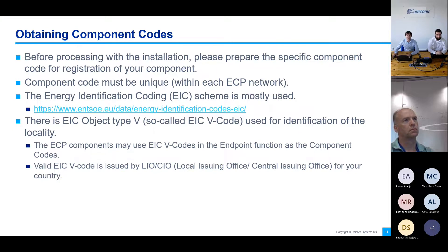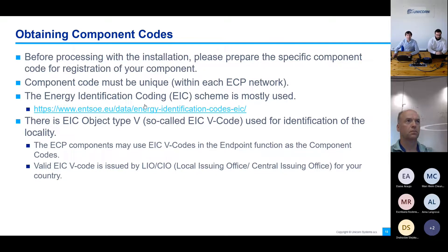Before starting with the installation, you also need to obtain component codes for your ECP components. You need to prepare a unique component AIC code — the Energy Identification Coding. There is a link on the NSOI web page with more information about this AIC coding scheme. You can get a new AIC code from your local issuing office or central issuing office for your country.